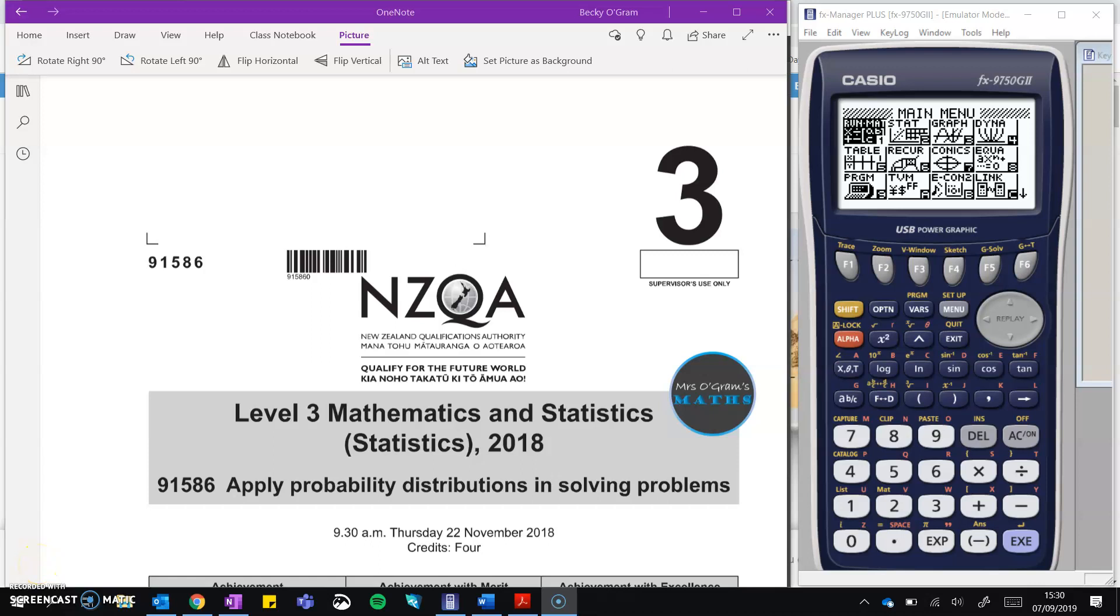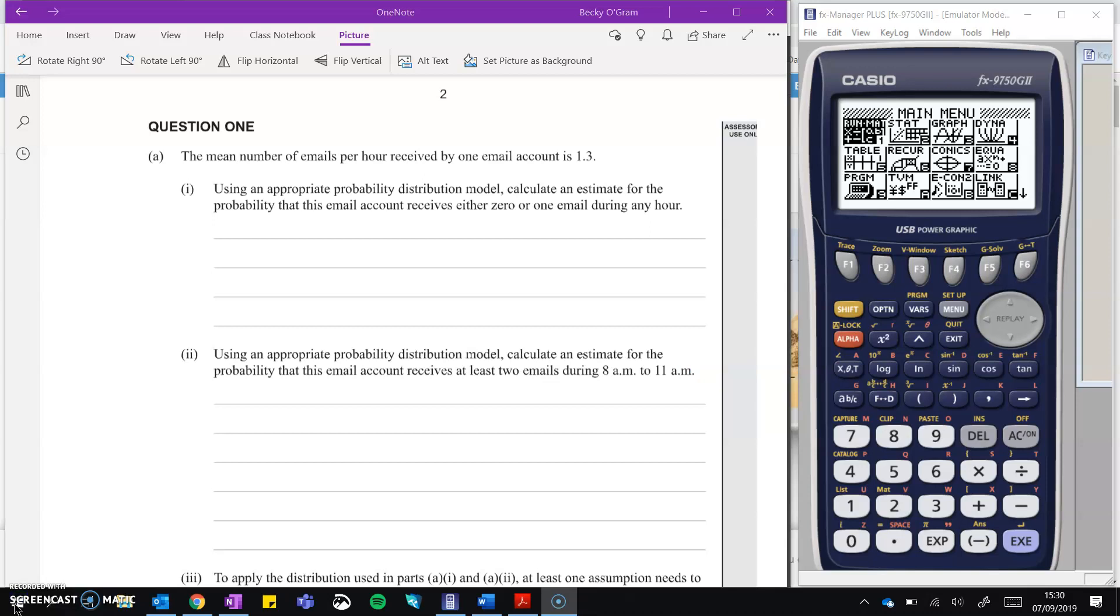Hi, welcome back to Mrs. O'Gramm's Maths. This video is going to take you through the external paper for Level 3 91586, which is the probability distributions paper that was done in 2018. I'm going to attempt to do this in one go, so we can just have one video with all of the solutions in it. That might mean that I might make a few mistakes on the way, so just bear with me and I'll correct them as we go.